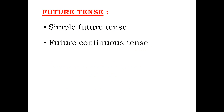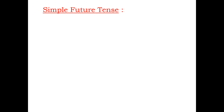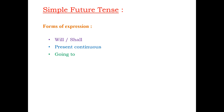Future tense is again of four types: simple future tense, future continuous tense, future perfect tense and future perfect continuous tense. Simple future tense is different from simple present and simple past. In fact, simple future is not simple — it is slightly complex. It tells us about the future as a fact and there are several ways of expressing it. Most important of them are with will or shall, with present continuous, with going to, and with simple present form.